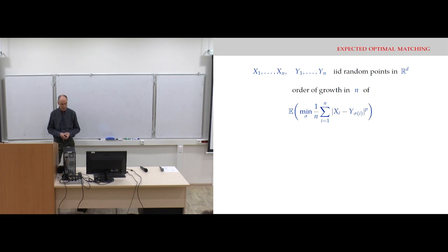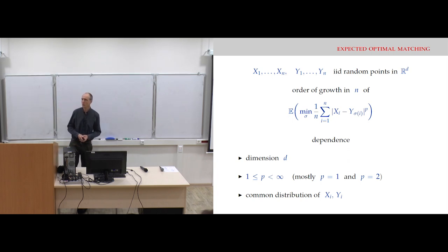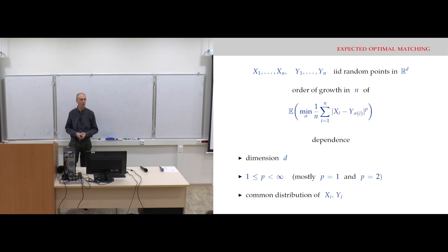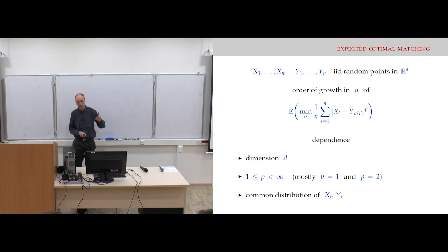This problem depends on a number of parameters, and in particular it depends in a rather sensitive way upon the dimension — the underlying dimension of the state space. It of course depends on p, the power of the Euclidean length in the definition of the cost function, which is simply |x - y| in Euclidean norm to the p. And this also depends on the common distribution, from a probabilistic point of view, of the sample random variables x_i and y_i. These are the three parameters we will follow.